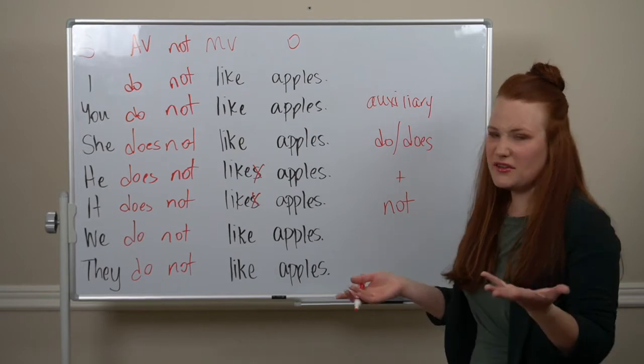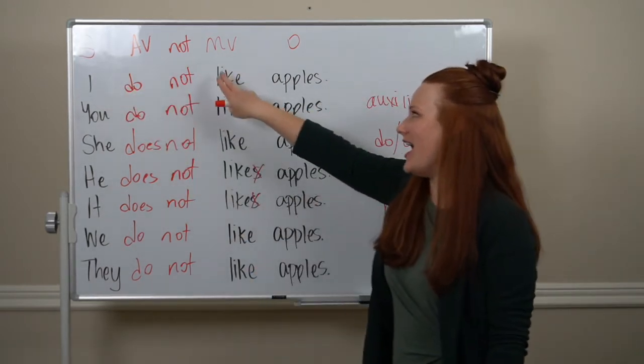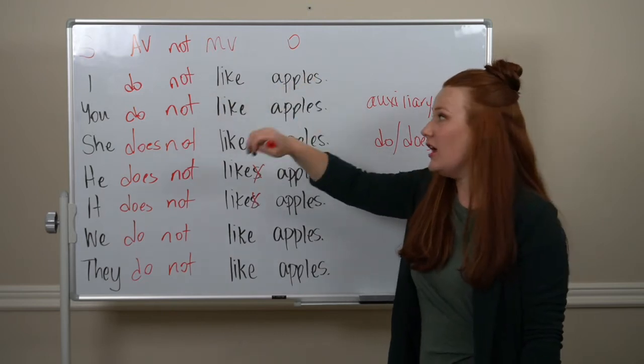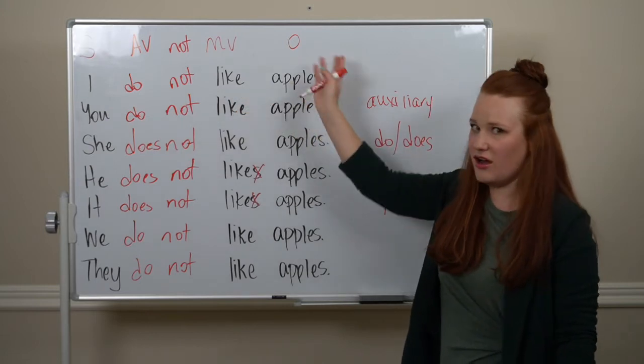It works the same with other verbs. I have a cat. I do not have a dog. I have a computer. I do not have a car.